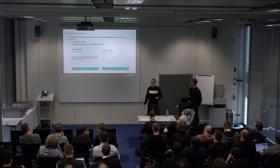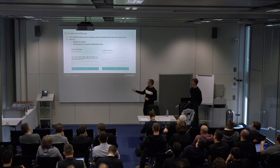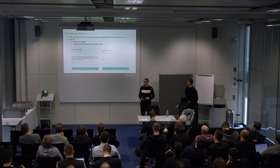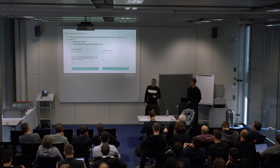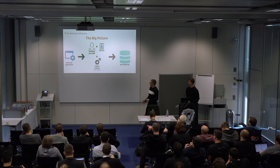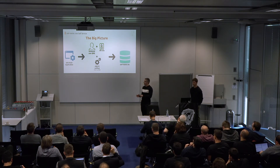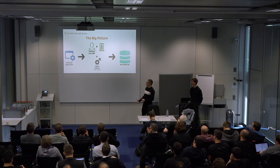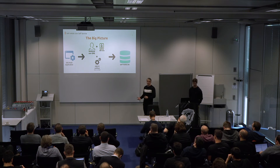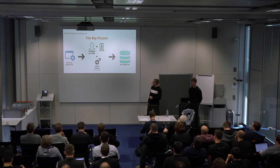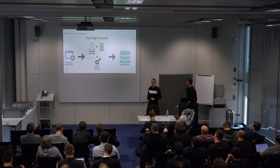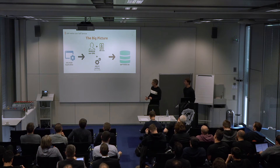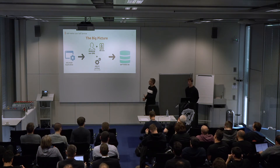Here we have what the user sees when trying to use this application — he can reset his password if he already has an account, or ask for a new account. The account creation process can be configured to require administrator approval or not. The user self-service frontend interacts with the SAP HANA database in the backend via a technical user — a special kind of user that cannot log in interactively, but has a specific role to allow it to modify or create users.